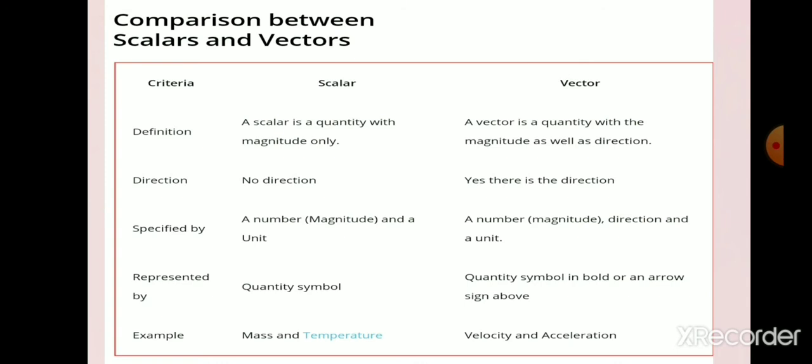Now let us compare between scalars and vectors. A scalar quantity is a quantity with magnitude only, whereas a vector quantity is a quantity with magnitude as well as direction. Scalars are specified by a number and a unit, whereas vectors are specified by a number, direction, and a unit.